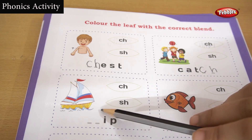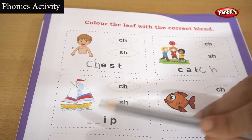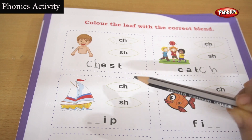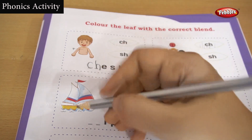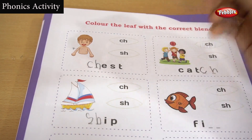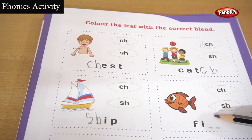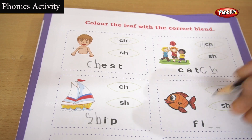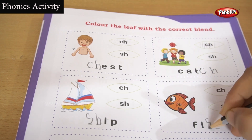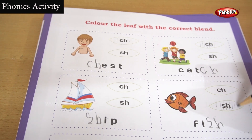Let's look at this picture - this is a ship. If you put CH then it will become a chip, like a potato chip. This is C-H-I-P, chip. And this is a fish. We have to correctly identify the blending.